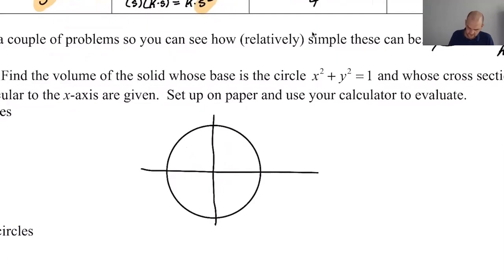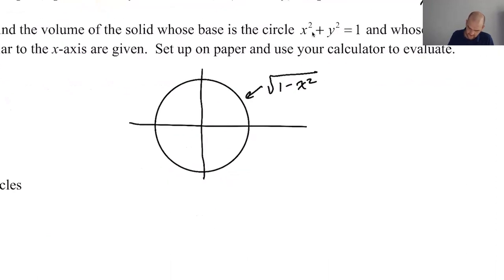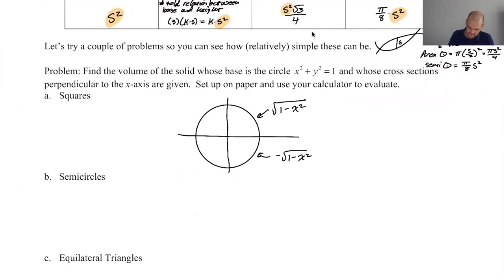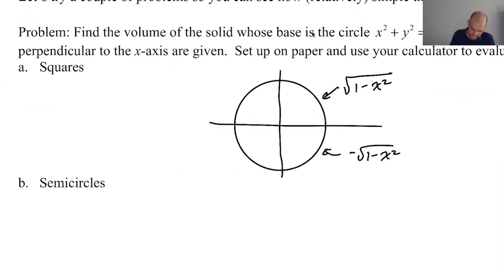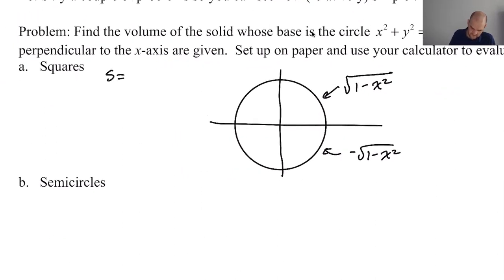So the issue, well, it's not really an issue, but I'm going to say this is the top. It's radical one minus x squared. And at the bottom is negative radical one minus x squared. All right. So then that makes S.